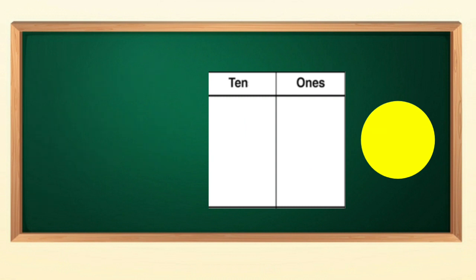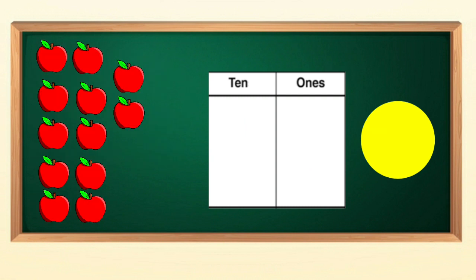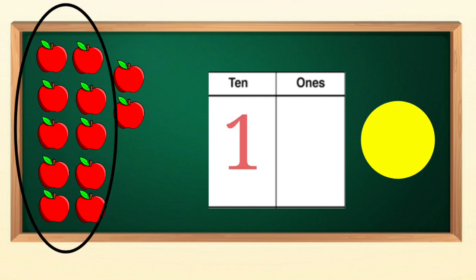Let's try to do one last sum. We have so many apples. Let's circle ten apples to make it into one ten. Children, now we have one ten and two ones. It means twelve.